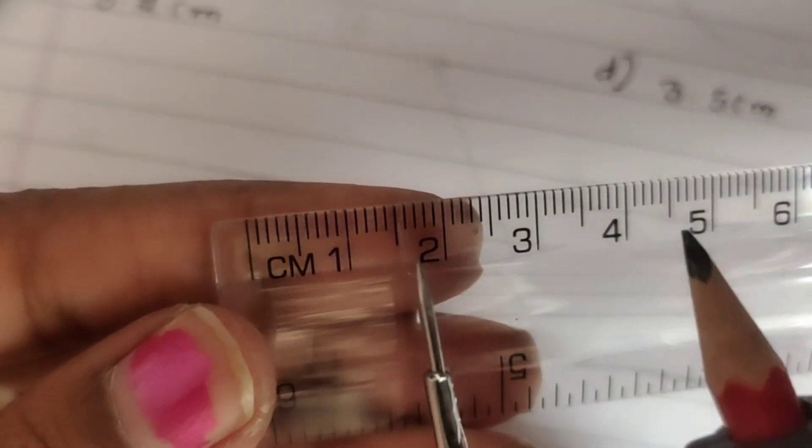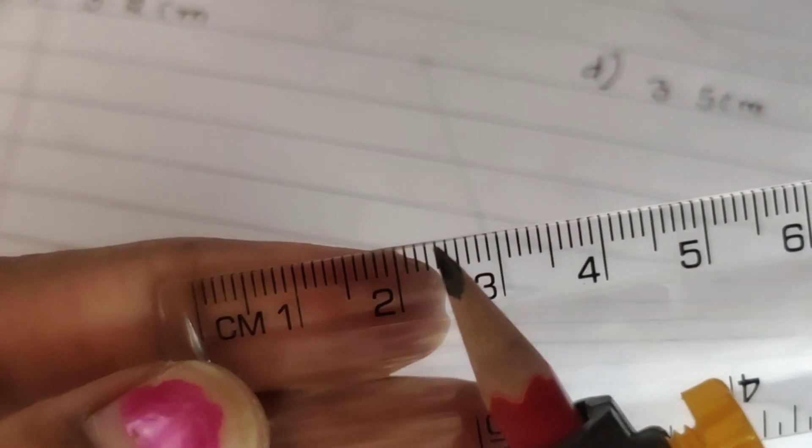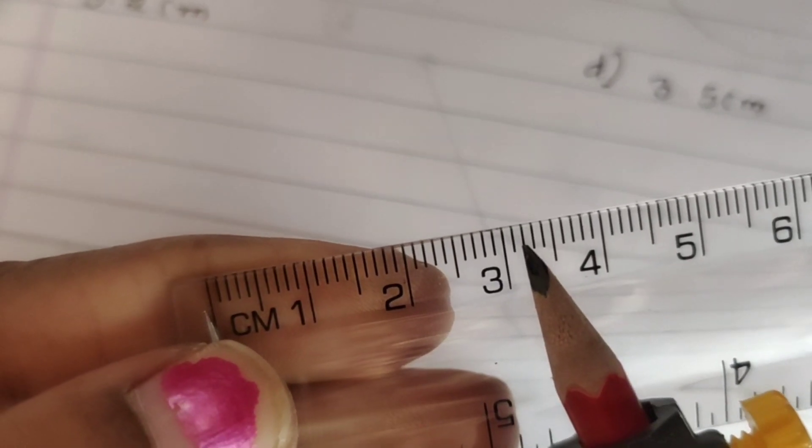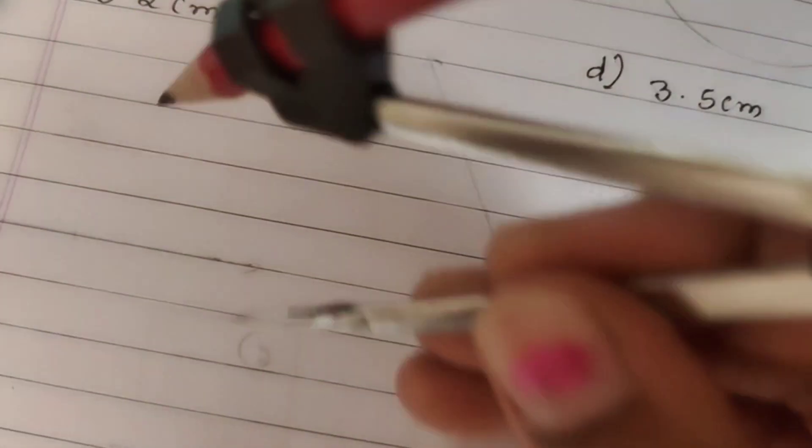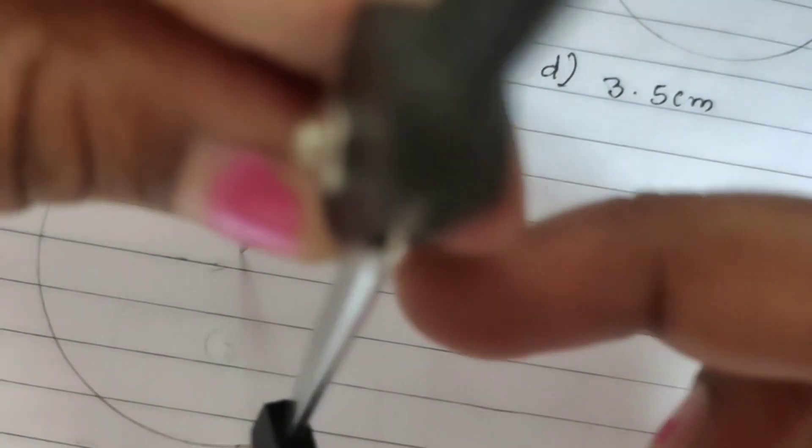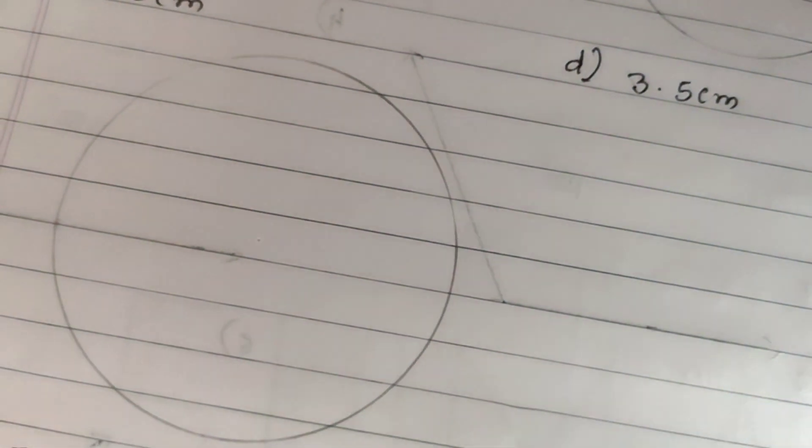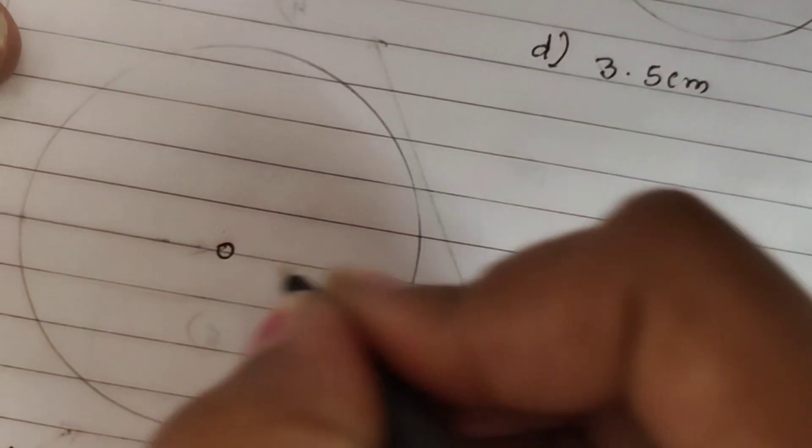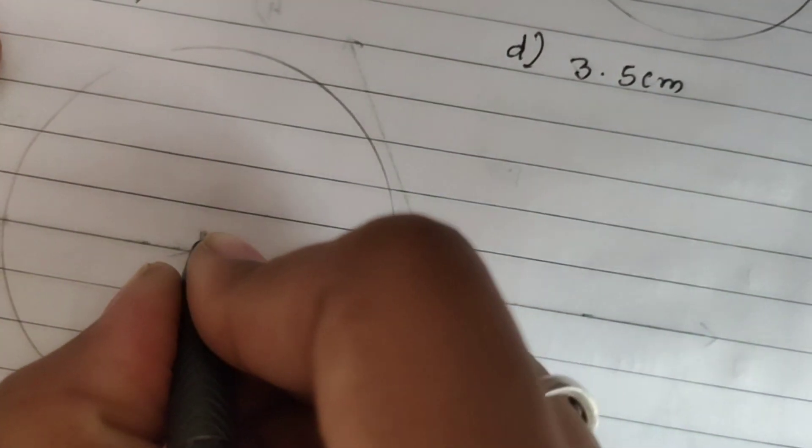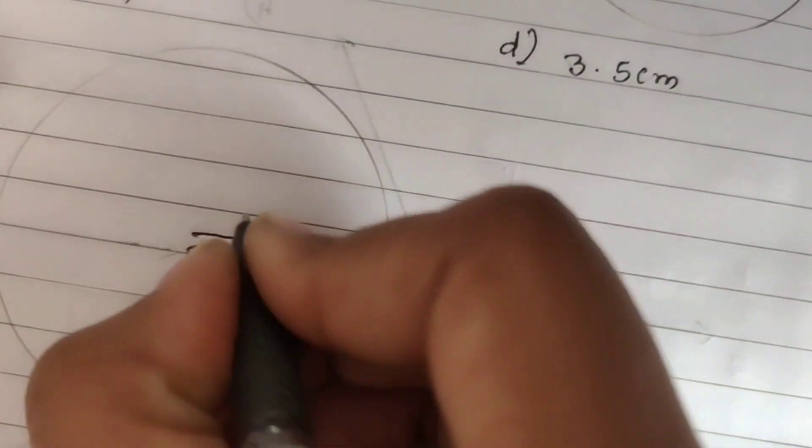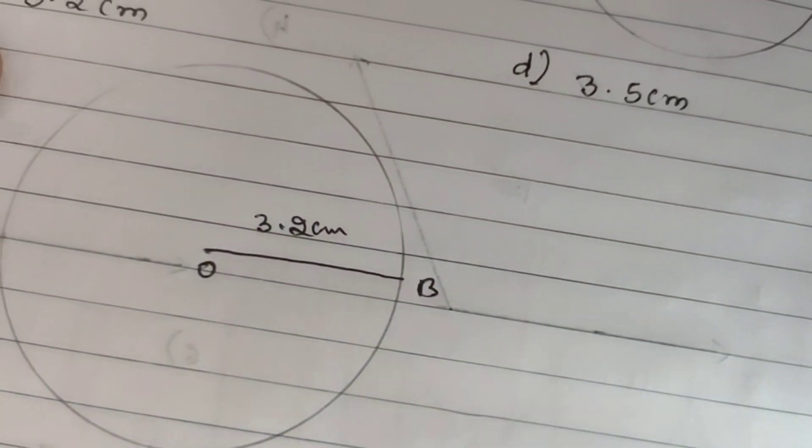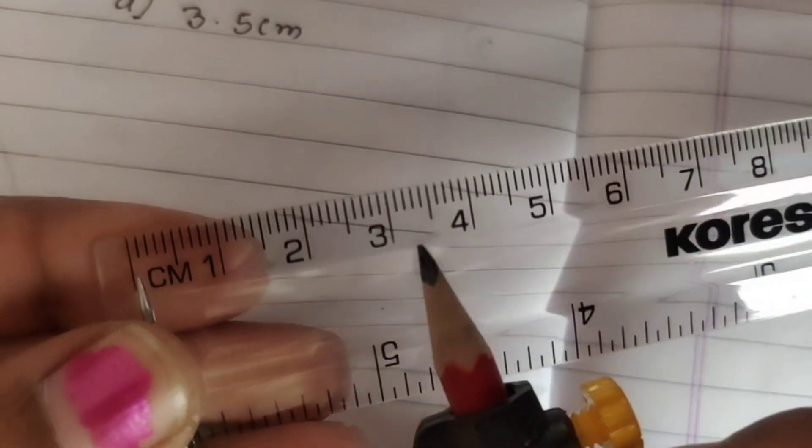Next, 3.2 cm measurement. Look, exact 3.2 I will draw the circle. This is the center. Join, 3.2 cm.